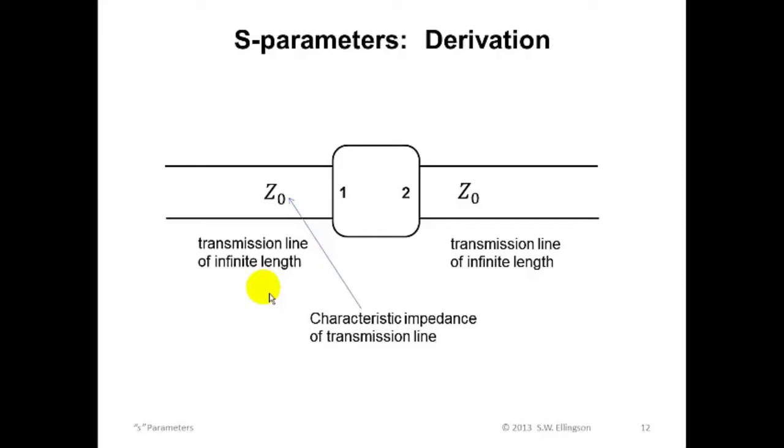In fact, we'll typically assume that Z0 is 50 ohms since this is a nearly ubiquitous choice in modern radio engineering. However, I should be clear that formally there is no specific requirement for the transmission lines to have real valued characteristic impedance. And there's certainly no requirement for Z0 to have a specific value.